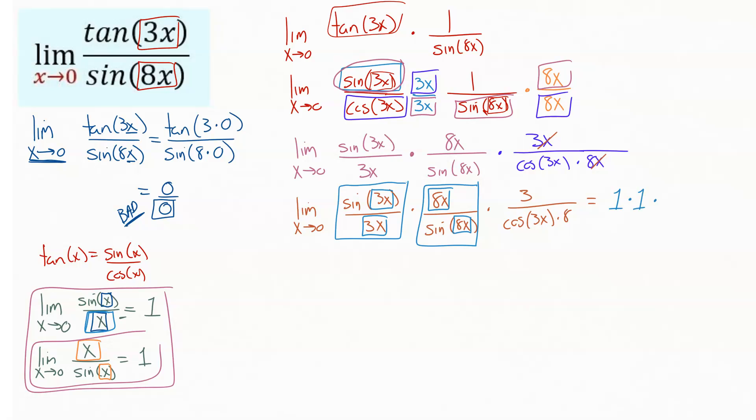And then when we get to the end here, we get 3. And now I'm back to option 1, I'm just plugging in 0 for x right now. So I get the cosine of 3 times 0 times 8. And so multiplying all the top togethers, we end up with 1 times 1 times 3 gets us 3. The cosine of 0 is 1, 1 times 8 gets us 8, and so that'll be our limit.